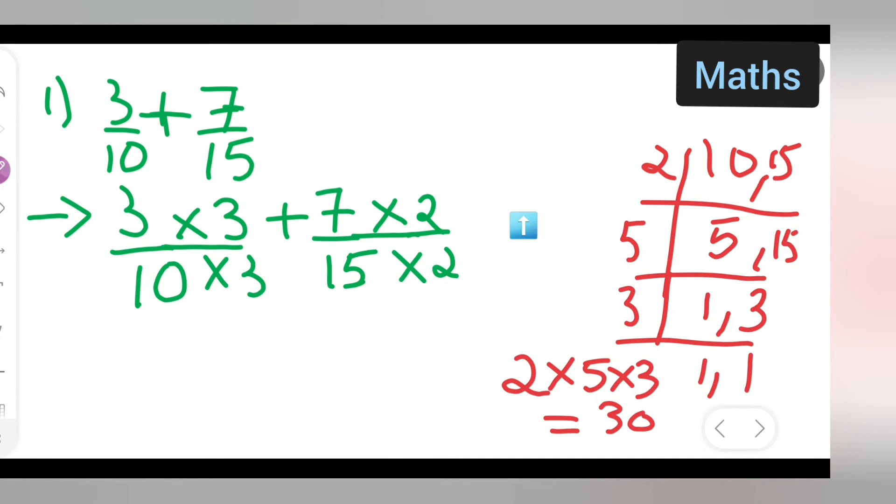So now what you will have to do is 3 threes are 9. So this is equal to 9 upon—what you all are going to get is 10 threes are 30. So write down 30 plus, now what is 7 twos? 7 twos are 14. So 14 upon 30.